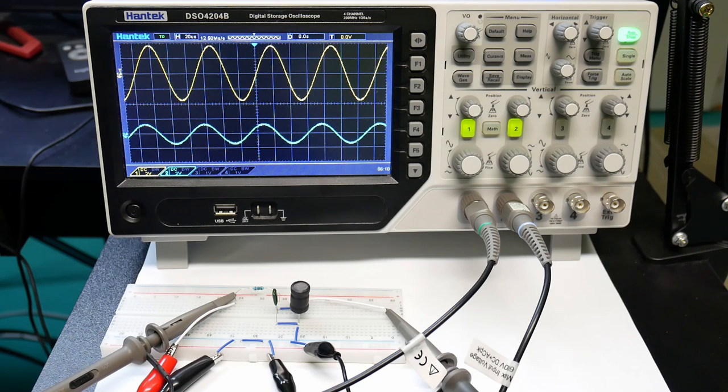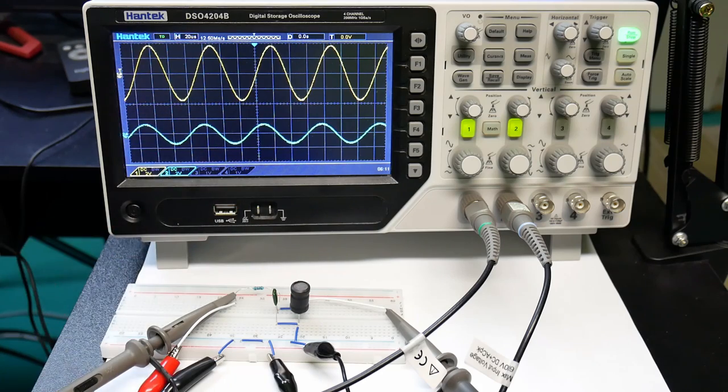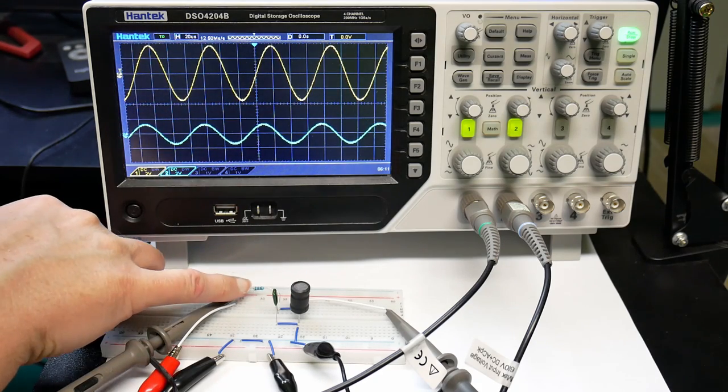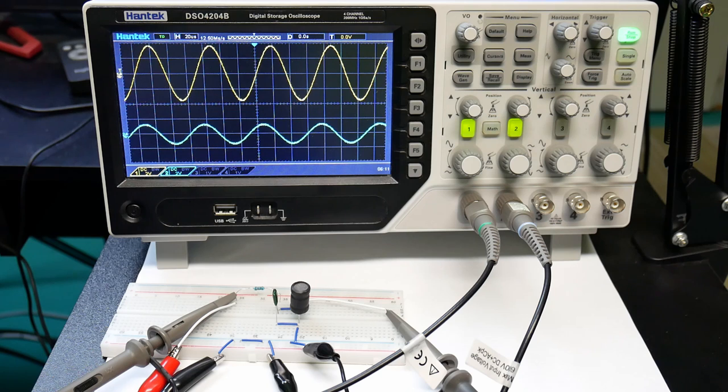And you can adjust the Q value by, because you saw from the formula, when you, you can adjust the, basically, you can do it quite easily by adjusting the resistance, and then you can tune in with the value.